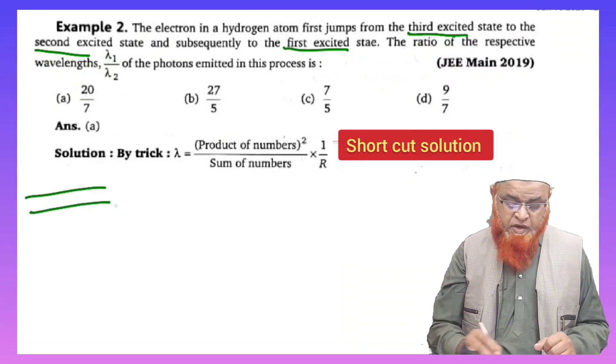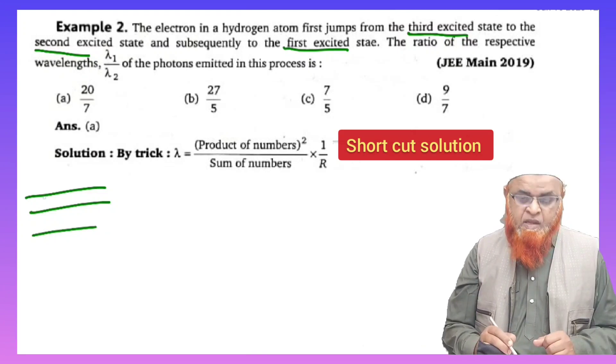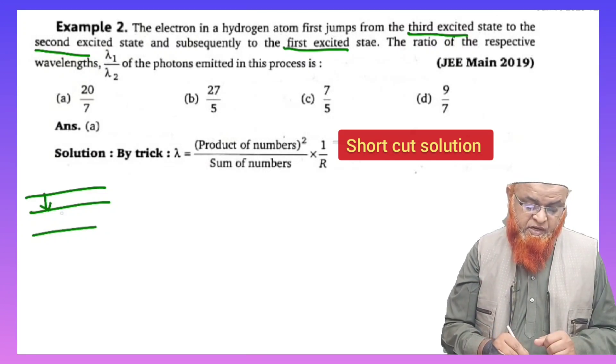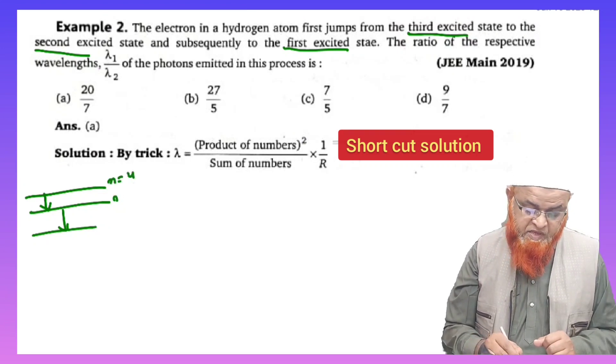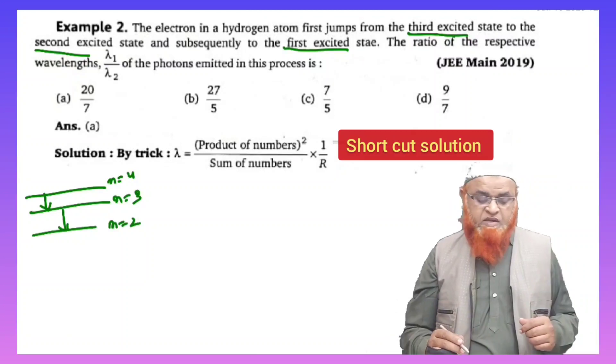Let me draw here. So transition takes place from here to here, again here to here. Third excited state means n equals 4, n equals 3, and this is n equals 2. So two transitions are going to take place here.